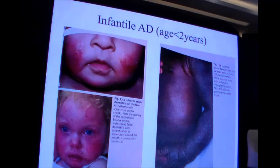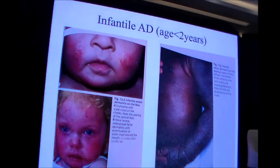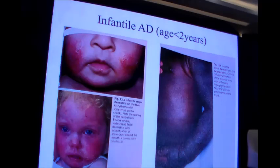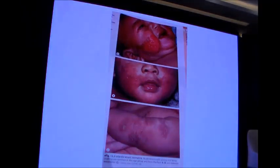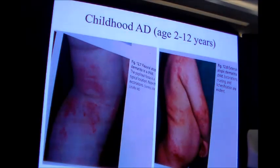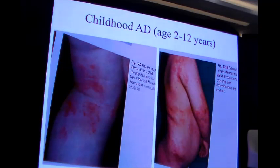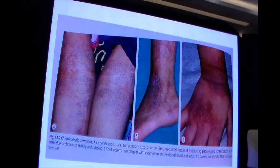In infantile atopic dermatitis, below 2 years of age, the condition mainly affects the cheeks, forehead, and extensors, sparing the axillary and groin regions. In the childhood phase, from 2 to 12 years, mainly the flexors are affected, though other areas such as the extensors of the feet and hands can also be involved.